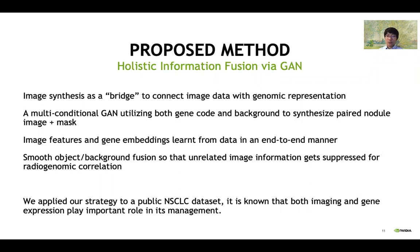In this work, we propose to use image synthesis to bridge the image and genomic information. We design a multi-conditional multi-output GAN utilizing both gene code and background image to synthesize paired nodule image and its mask. In this way, image features and gene embeddings can be learned from data in an end-to-end manner. Also, we can ensure a smooth object-background separation so that unrelated image information is suppressed for radiogenomic correlation. To test this concept, we apply our strategy to a public non-small cell lung cancer dataset with paired image, segmentation, and sequencing data.